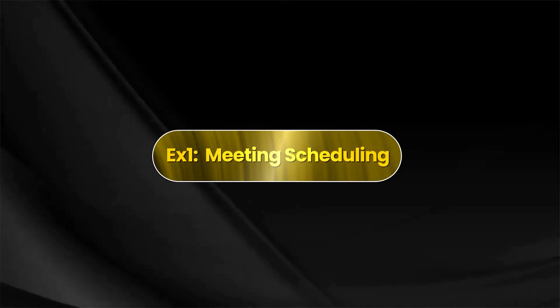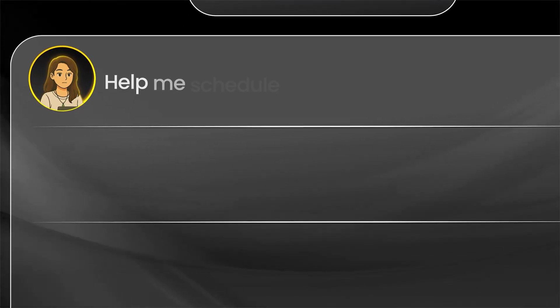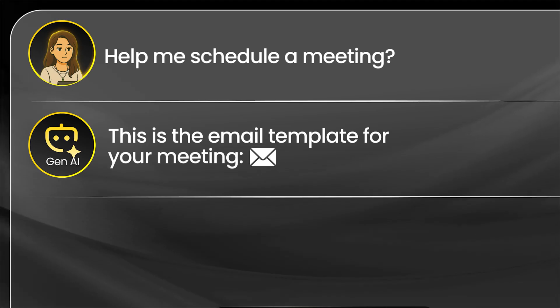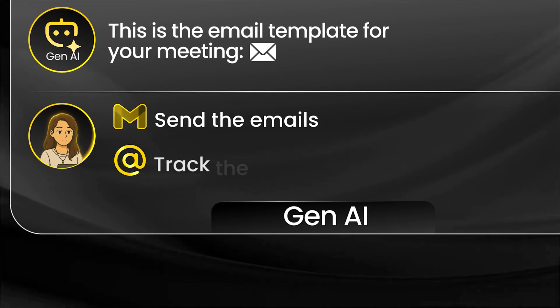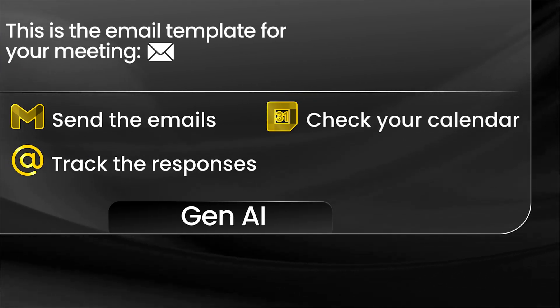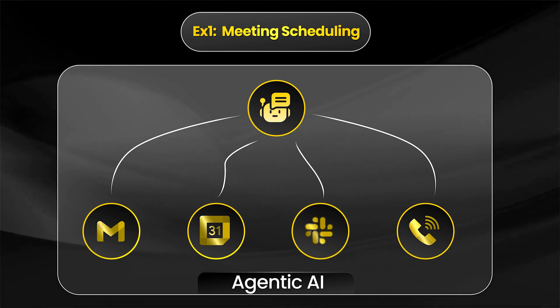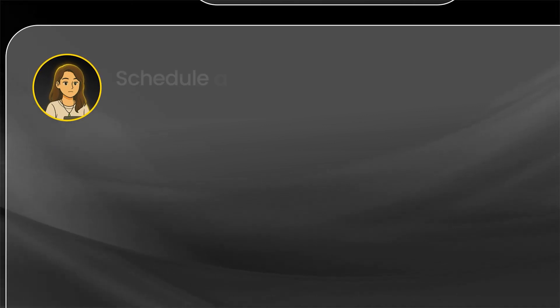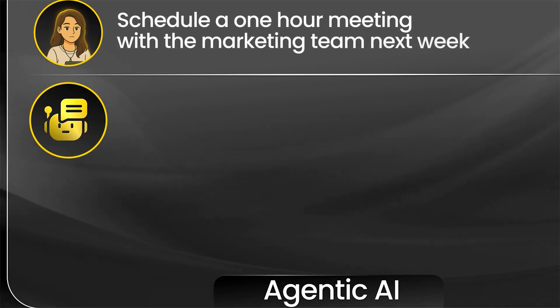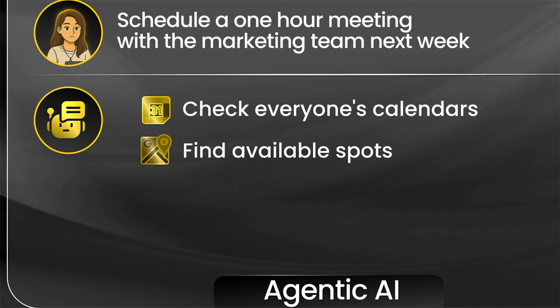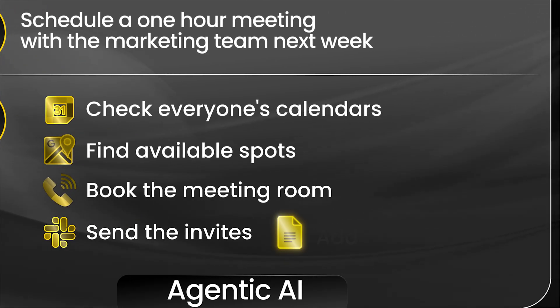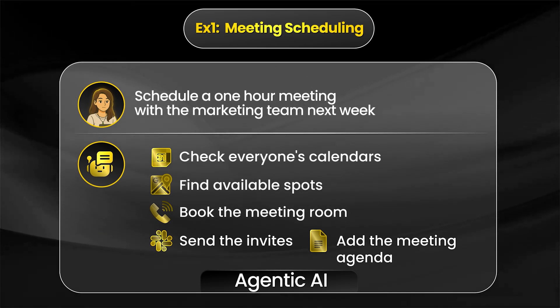Let me give you some real examples comparing Gen AI with Agentic AI. Take meeting scheduling. With Gen AI, you ask for help scheduling a meeting and it gives you a nice email template — but then you still have to send the emails, track responses, find a time that works, and send calendar invites. With Agentic AI, once you connect your agent to your calendar and email client, you simply type in plain English: 'Schedule a one-hour meeting with the marketing team next week.' The AI agent checks everyone's calendars, finds available spots, books the meeting room, sends the invites, and even adds the meeting agenda. You do nothing except tell it what you want.